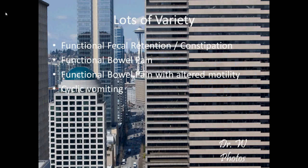Functional bowel disorders in children come with a tremendous amount of variety. Functional fecal retention and constipation represents the vast majority of what we see. However, functional bowel pain with altered motility and cyclic vomiting are also things that we see. We'll talk a little bit about these.